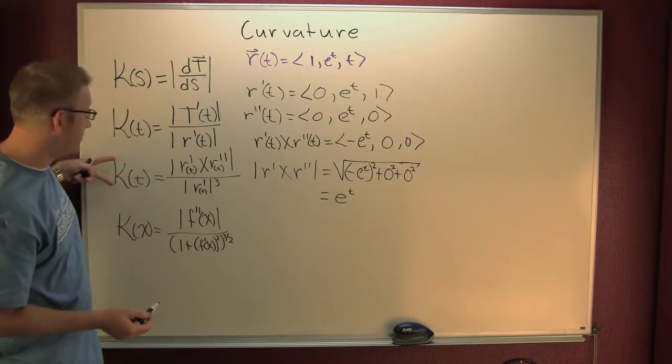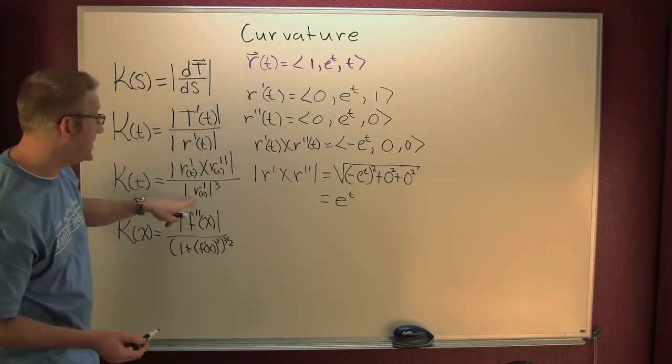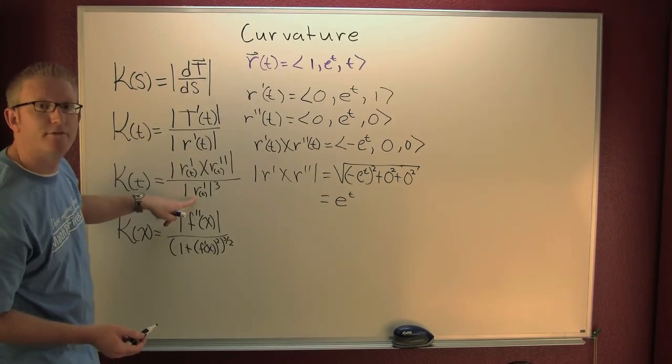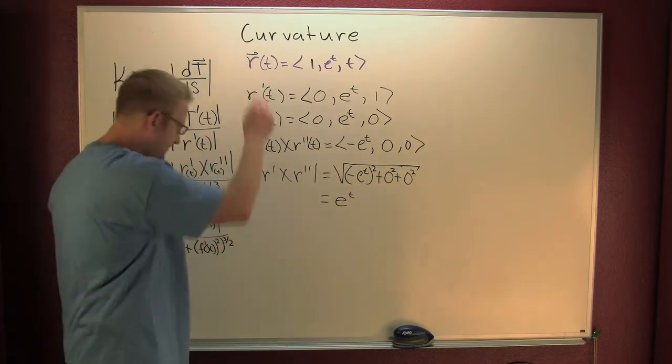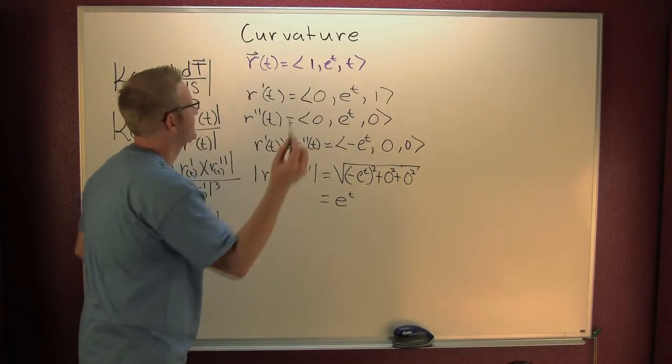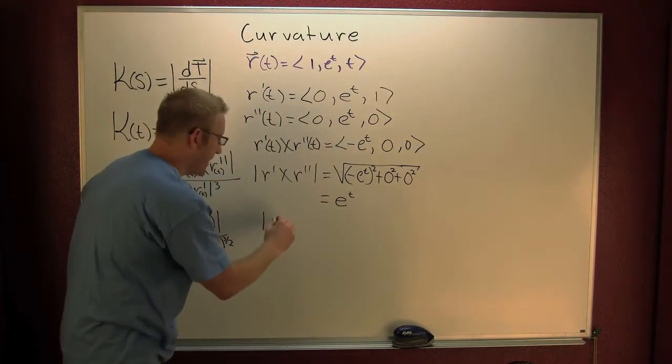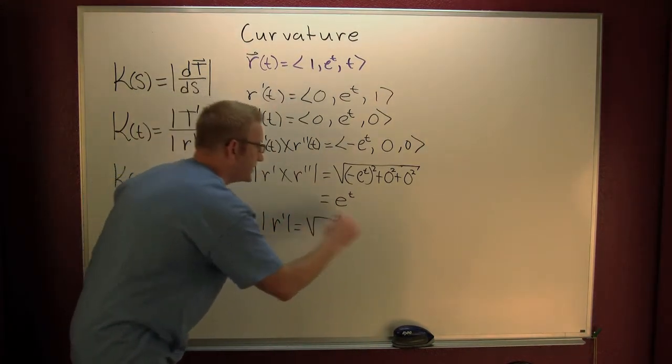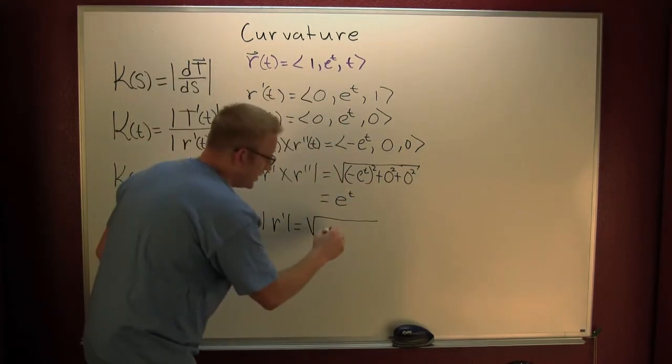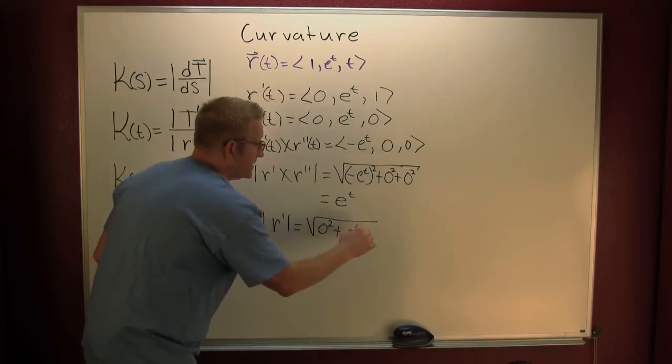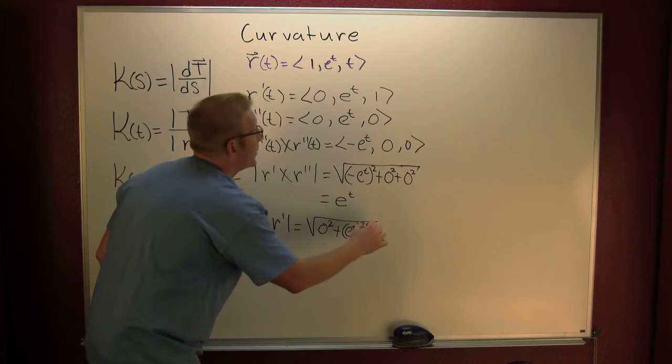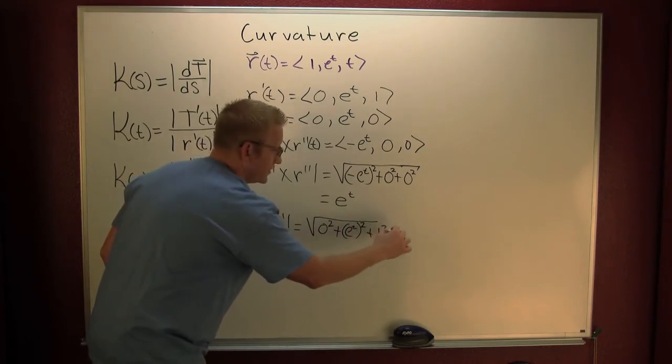So what else do I need if I'm using my third form? I'm going to need the magnitude of the first derivative. So then the magnitude of my first derivative. This is going to be the square root of zero squared plus e to the t squared plus one squared.